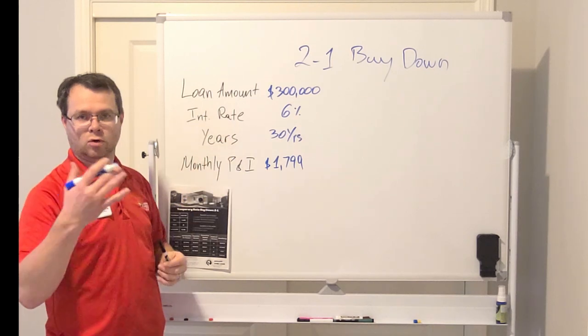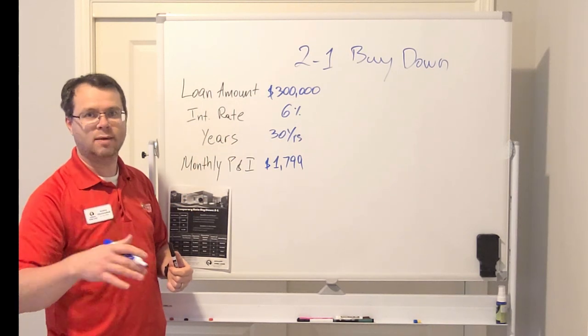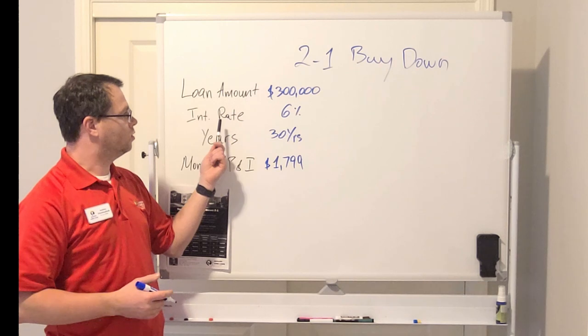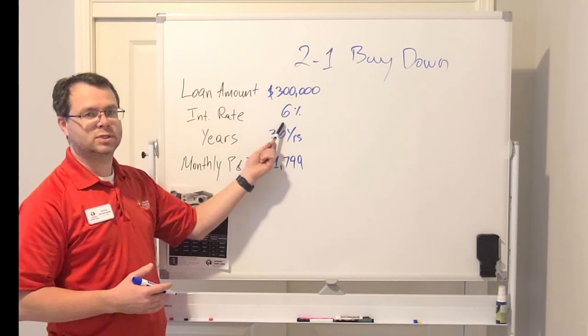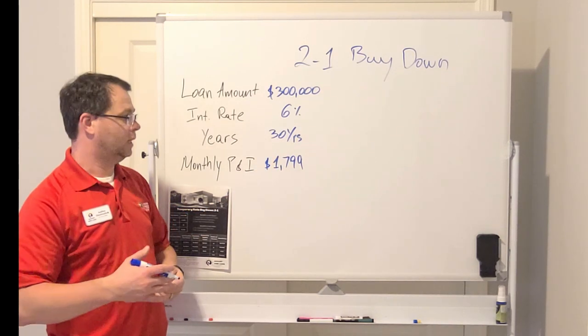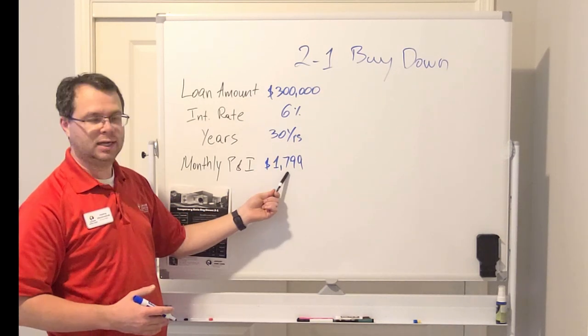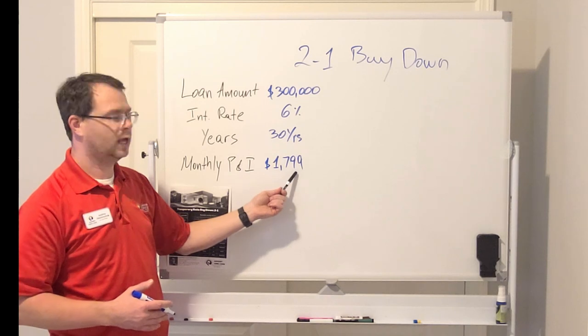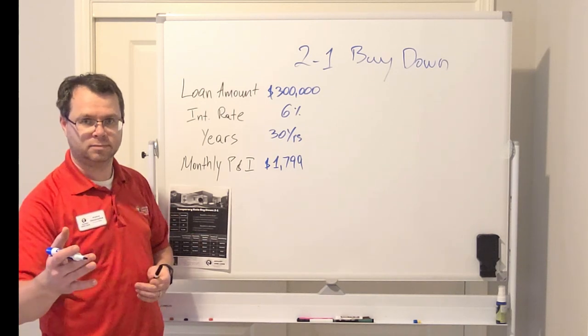Your current rate, based on your credit score, the loan type, and the down payment, you qualify at 6% interest rate. You have a 30-year mortgage and your monthly payment is going to be $1,799 for the next 30 years.